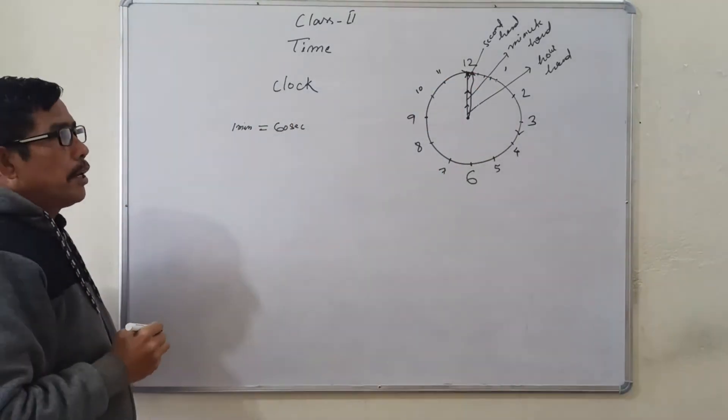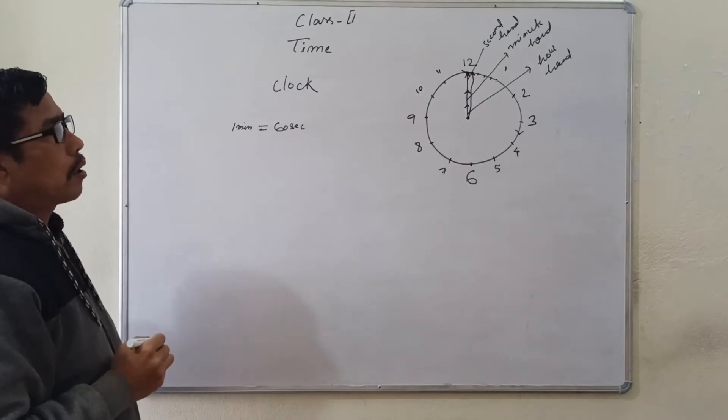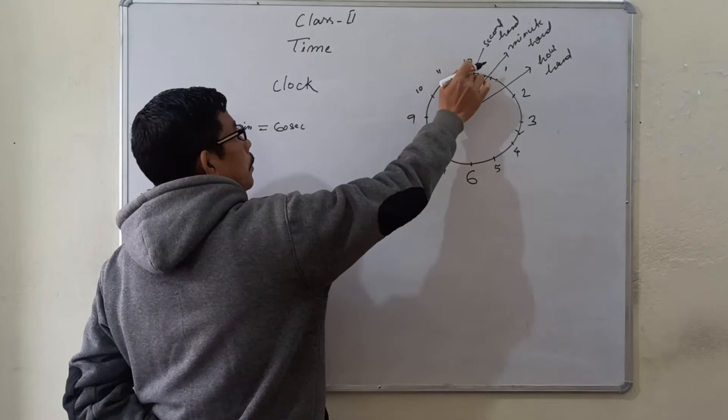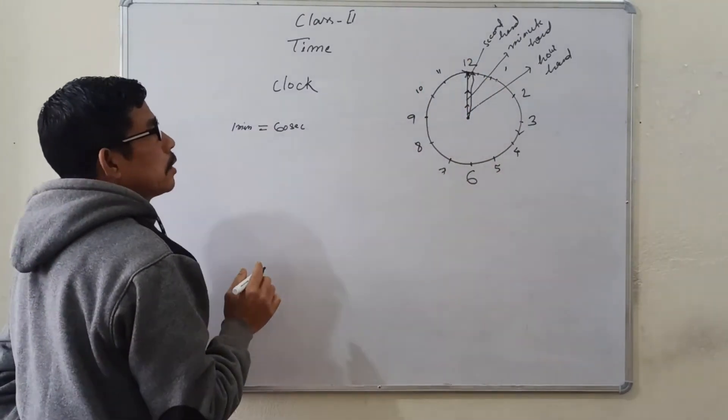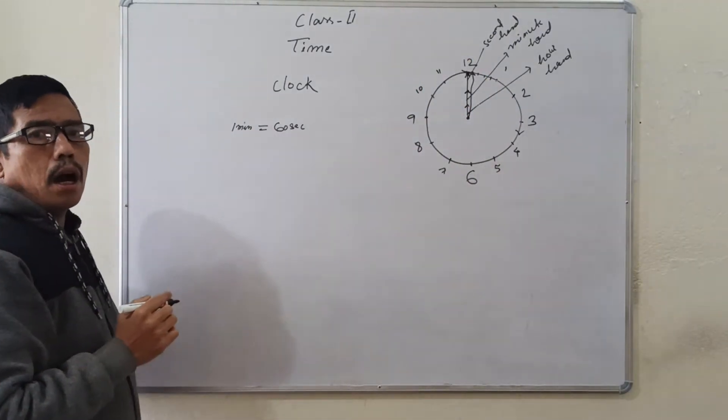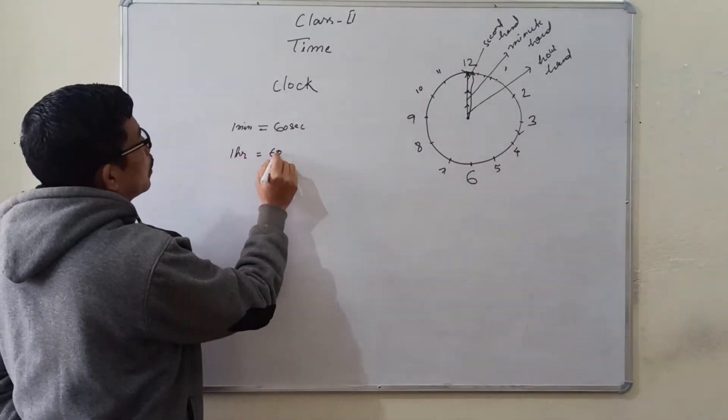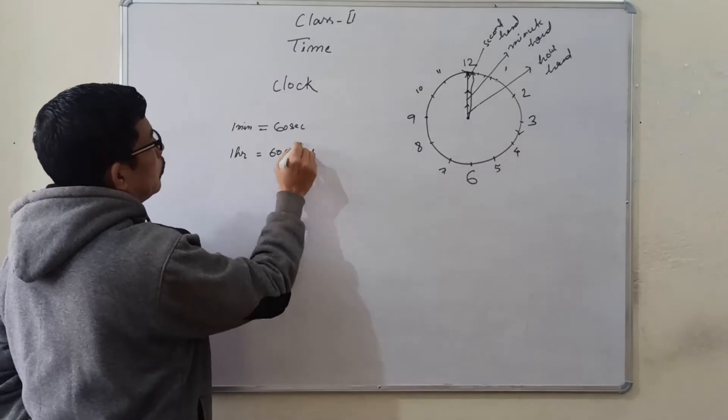Again, when the minute hand moves one complete rotation from 12 to 12, that is 60 divisions, that is called one hour. So, one hour equals 60 minutes.